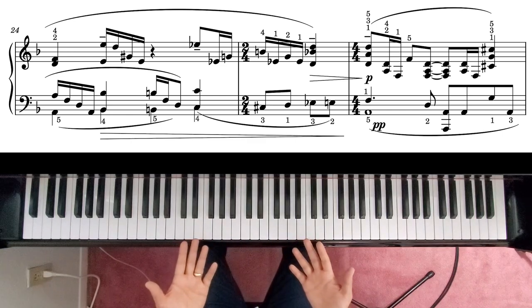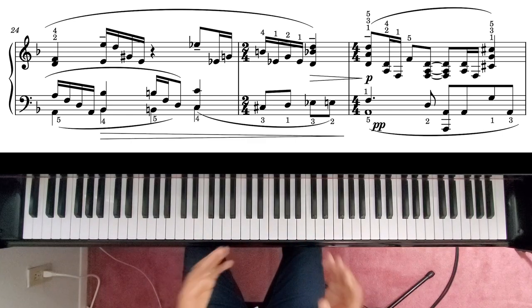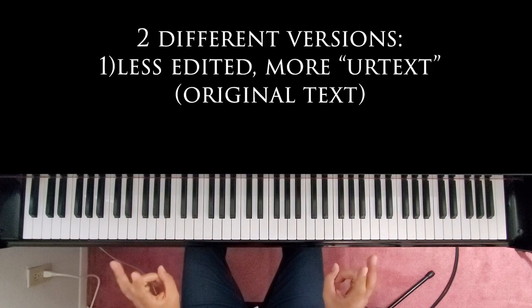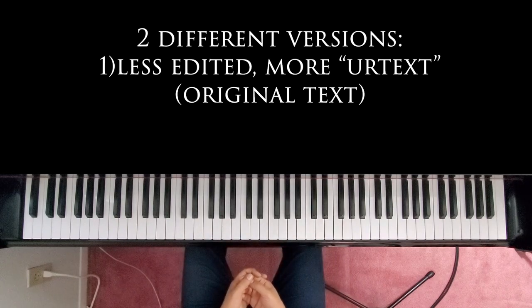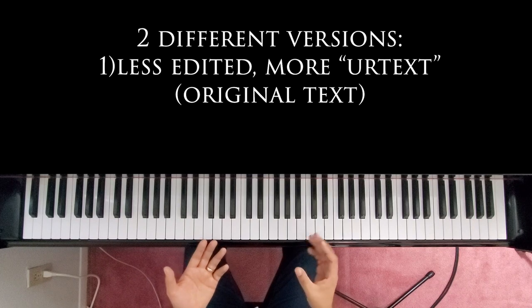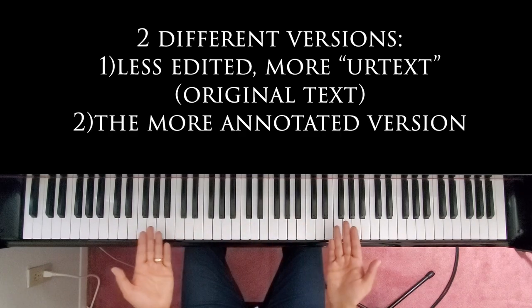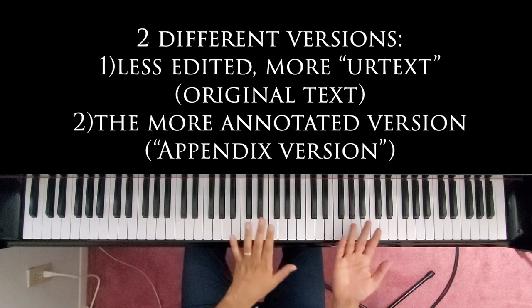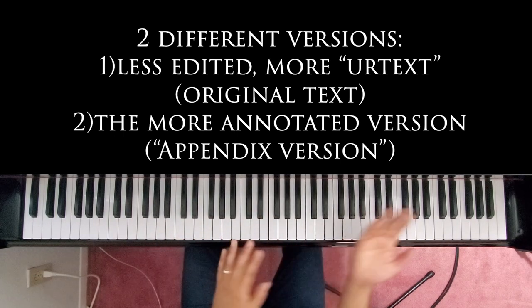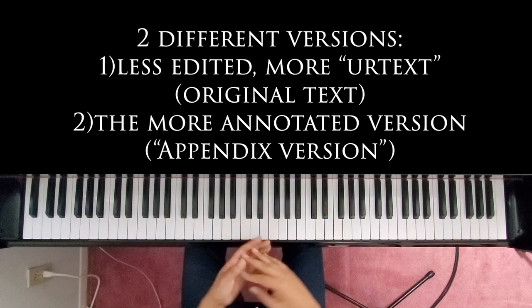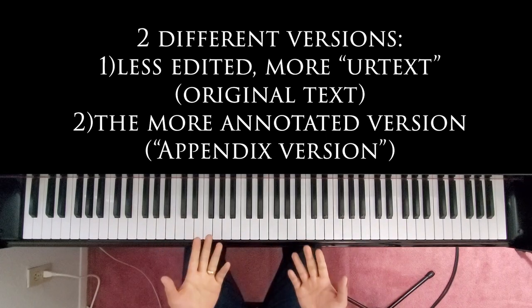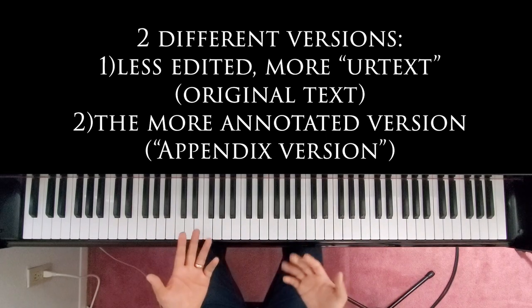So the way that I plan to circumvent that is to release two different versions, one that is more bare or urtext and truer to the original form without all the fingering suggestions and without all the annotations. And then alongside of it, have this version kind of like an appendix. So if someone's working on it and is struggling with a certain section, they can flip to the version that's heavily annotated and maybe choose to use some of these, maybe choose to ignore them. Again, the goal being to provide as much value as possible here.